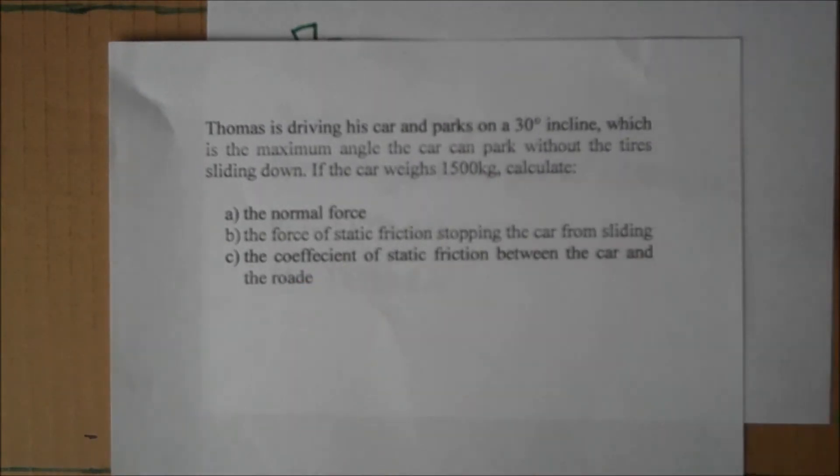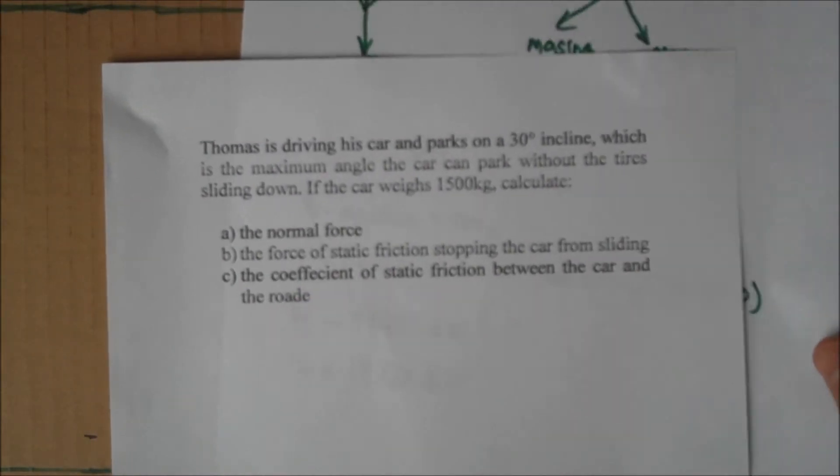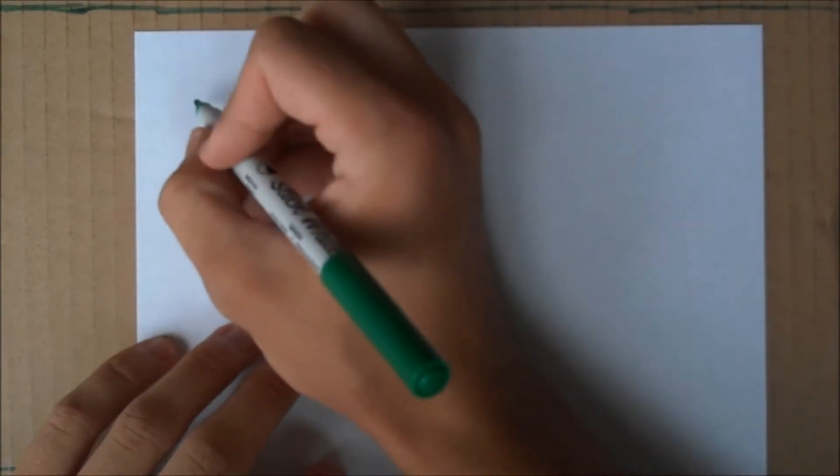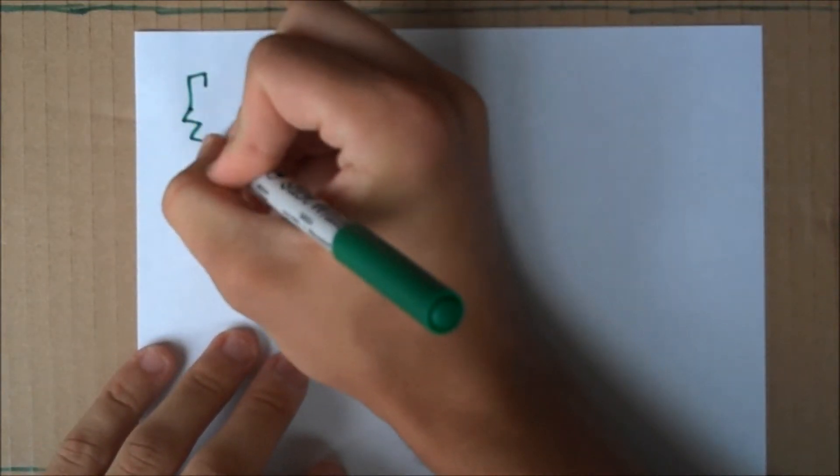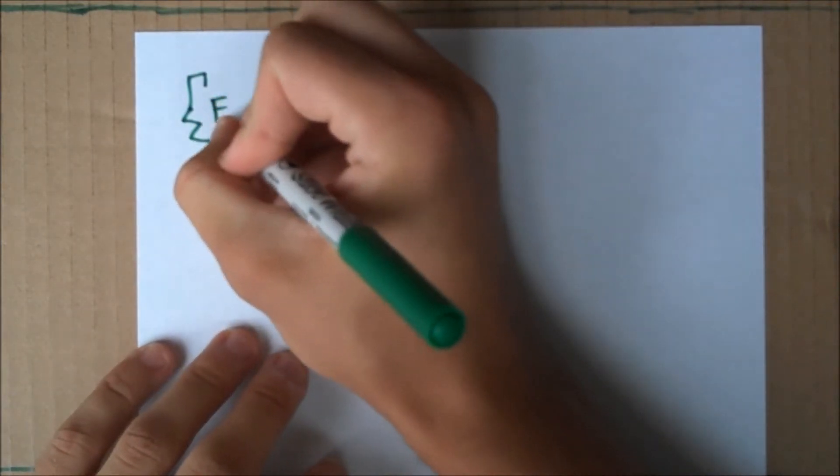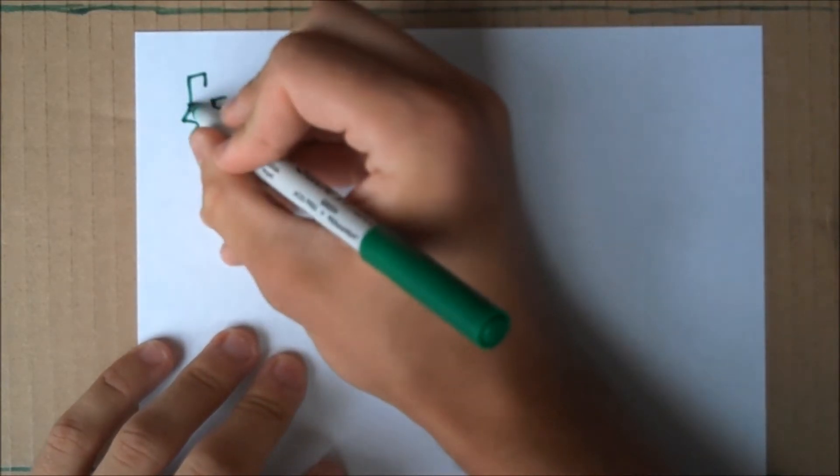Now we want to solve for part B, which is the force of static friction stopping the car from sliding. We're going to set up similar to the first one, but this time it's going to be the sum of the forces in X.